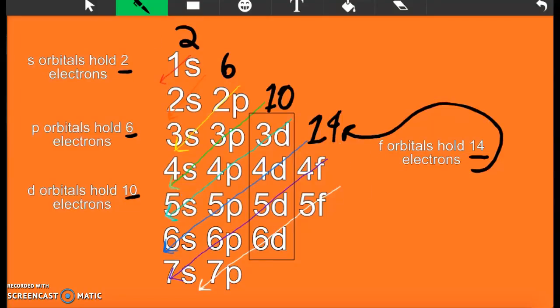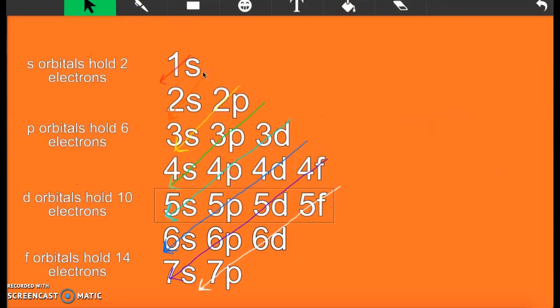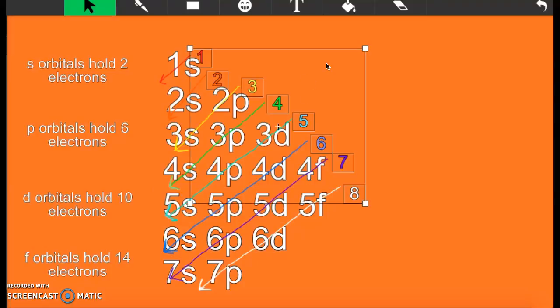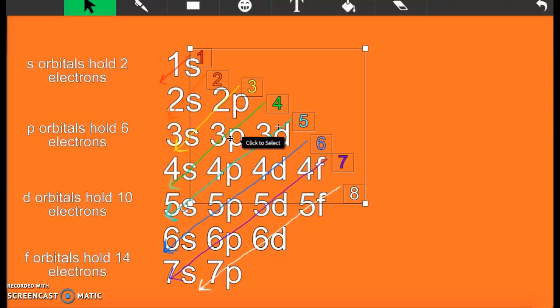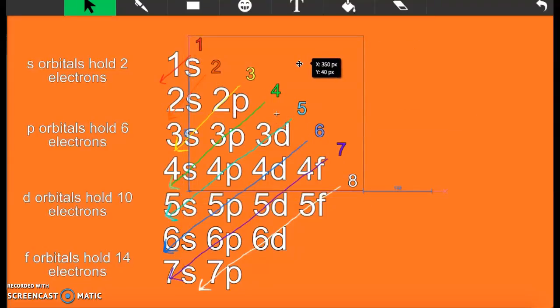Now, the next step, back to those diagonal lines. I told you they were numbered very specifically, and this is why. They're numbered this way because this is the order that you fill them.